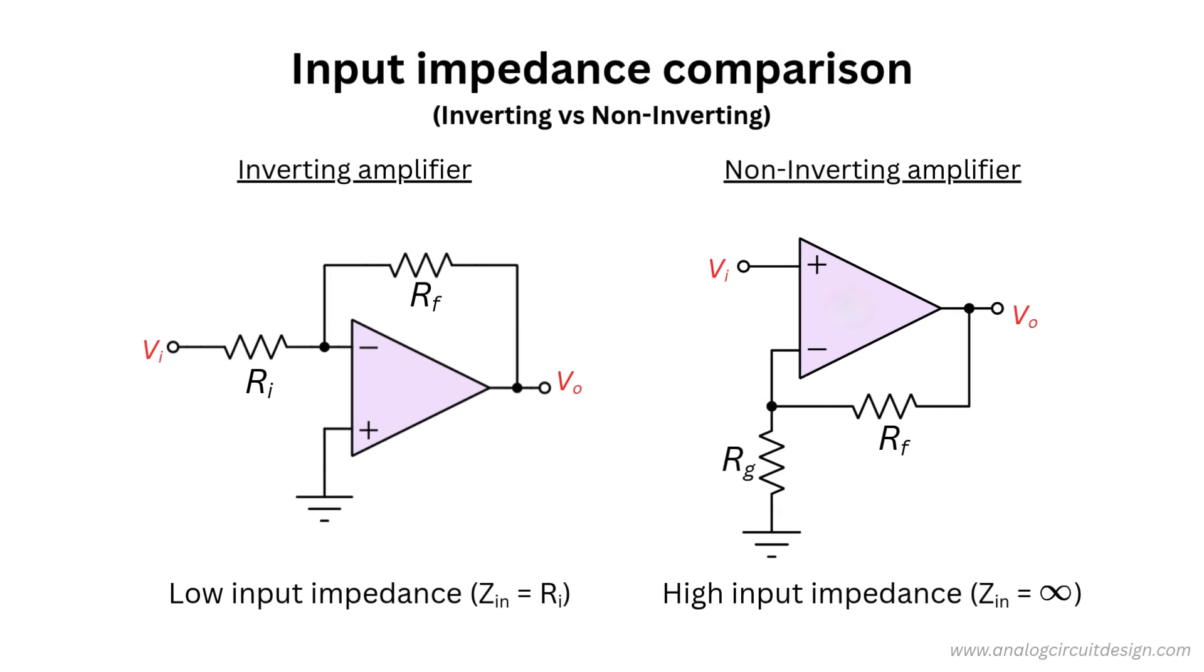One big difference lies in input impedance. The inverting amplifier has a relatively low input impedance, determined by RI, which takes current from the source creating additional voltage drop at the source. Therefore, the inverting amplifier may not be optimal choice for sensor readouts, especially sensors with high output resistance.